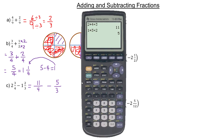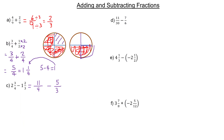I have two fractions that I'm subtracting which don't have the same denominator, so again we want to find the common denominator. If you find the smallest one, that's usually the easiest to work with. There are larger denominators, but then you have to reduce more in the end.